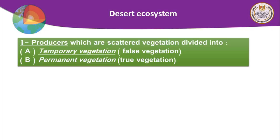The desert food chain is short and has few trophic levels — the opposite of the marine food chain — because predators are few and prey are scarce. The producer in the desert is called desert vegetation, which can be temporary (false) vegetation, appearing in winter only after rainfall and disappearing in the dry season while leaving seeds in the soil, or permanent (true) vegetation, which appears all year and does not depend on rainfall.